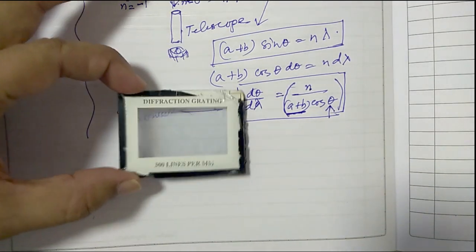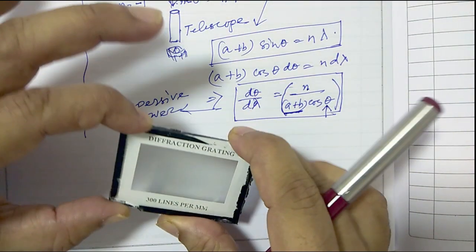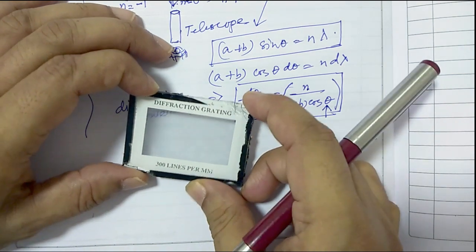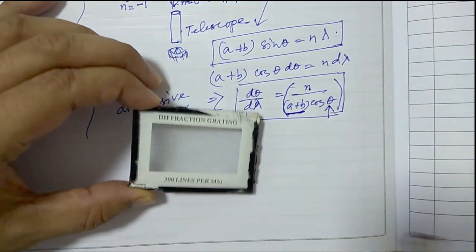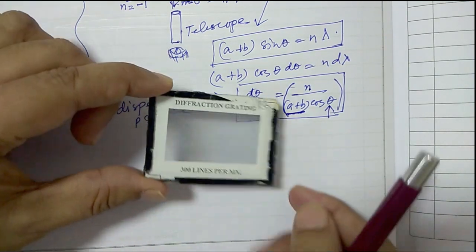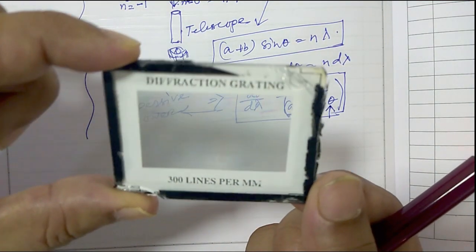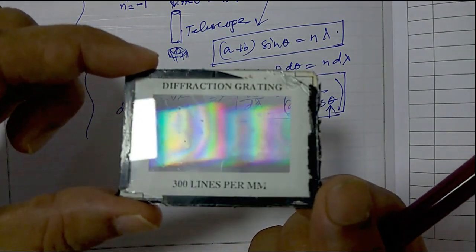Before we take the readings from the spectrometer setup, we have to measure this a plus b in our diffraction grating. So what you see in this diffraction grating, you see some colors.